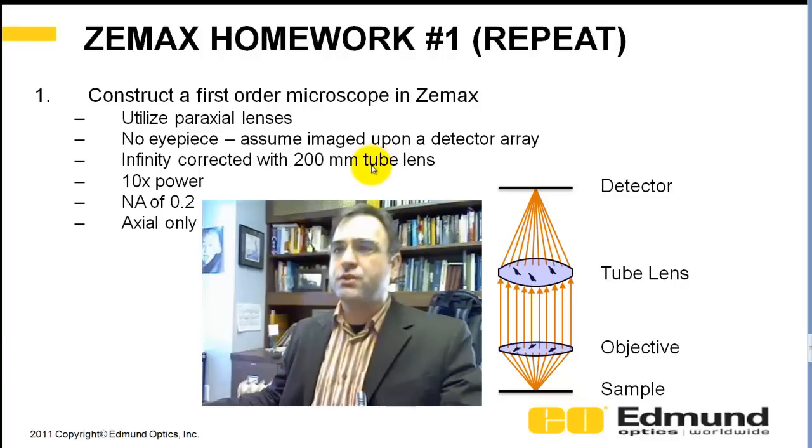So I say, use an infinity corrected 200 millimeter tube lens. This is your tube lens, it's 200 millimeters. Infinity corrected between your objective and your tube lens, it's infinite. In some cases, you've got converging light here. This is 10 power. The NA is 0.2, so down here is 0.2.